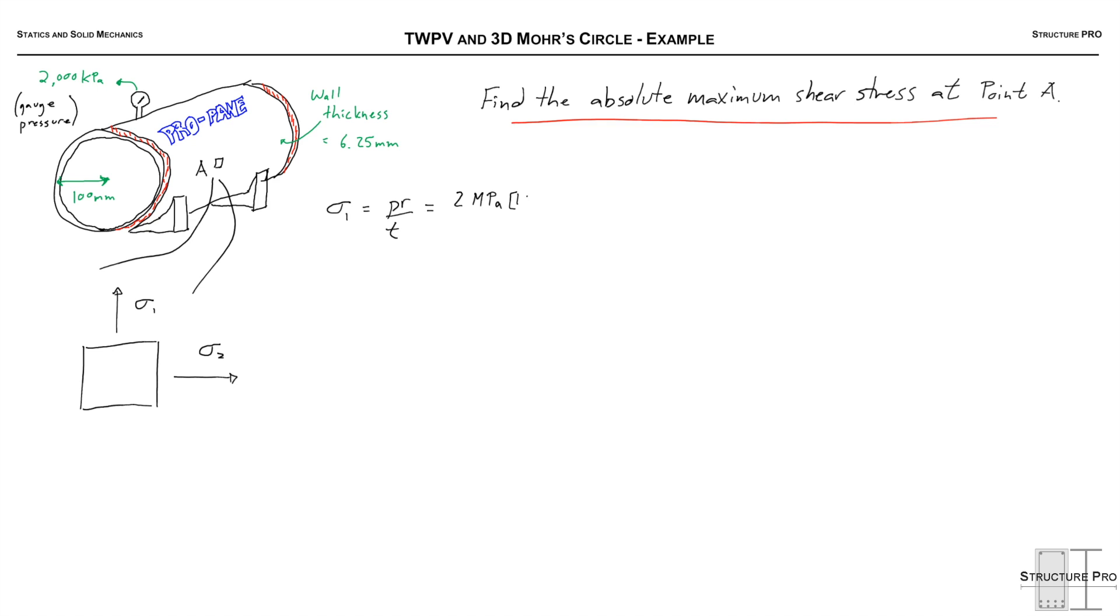We know that sigma 1 is PR over T, so that's 2 megapascals times 100 millimeters divided by 6.25. That R over T we figure out is 16, which is greater than 10, so we know our thin-walled pressure vessel equations are valid.